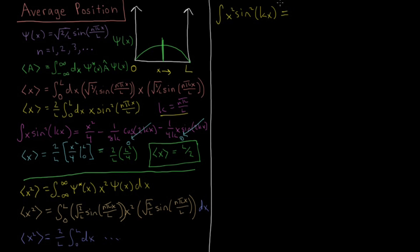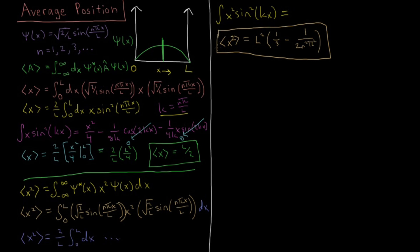Looking that integral up in a table and plugging everything in — without writing out all the algebra for brevity — after crunching through the algebra, the expectation value of X squared can be factored into the form: L squared times the quantity one-third minus one over 2N squared pi squared. So that is the expectation value of X squared — the average value you would expect for X squared.